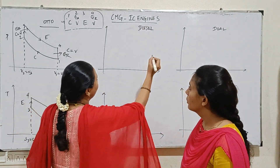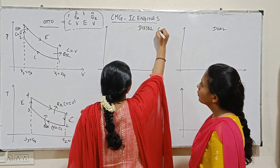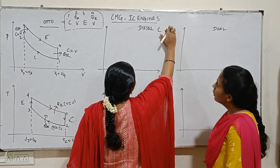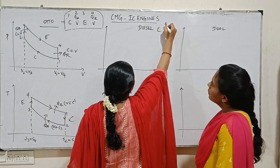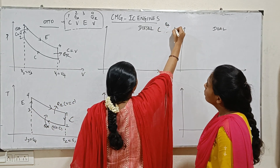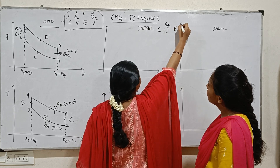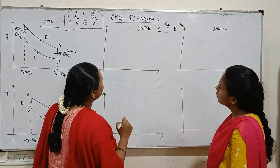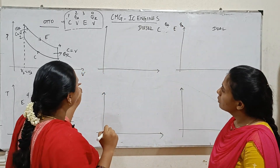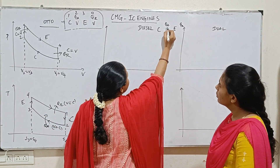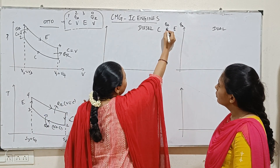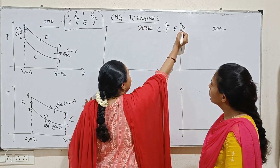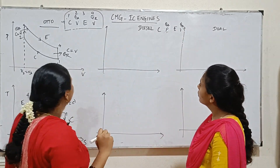Now, the Diesel cycle. Diesel cycle processes are: compression, heat addition, expansion, and heat rejection. The difference is heat addition is at constant pressure, while heat rejection is at constant volume.